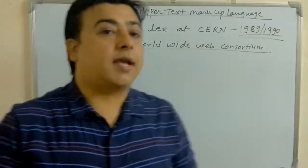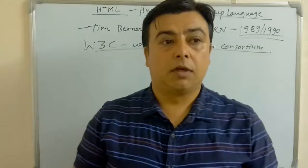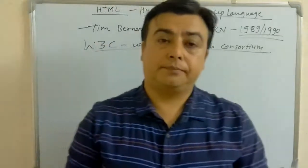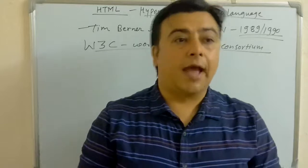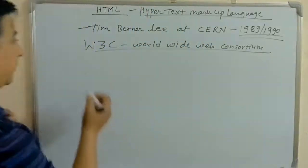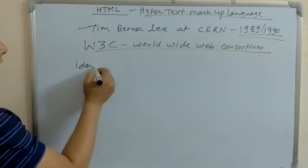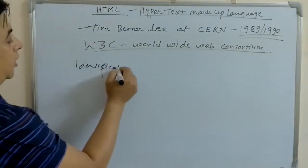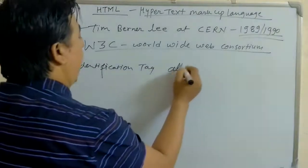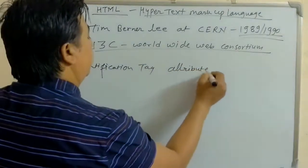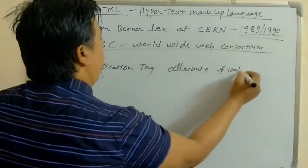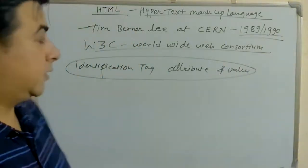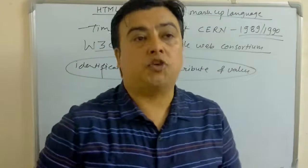HTML tag. HTML tag contains three parts. That is, identification of tag, attribute, and value. This will be clear when I write the tags. At that time, I will teach you about this.